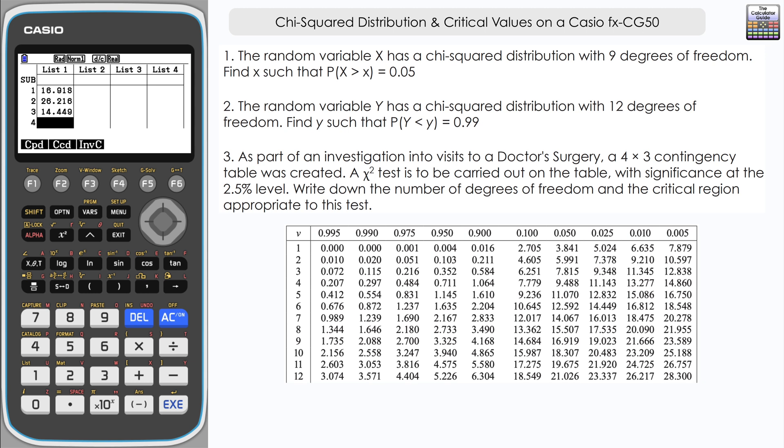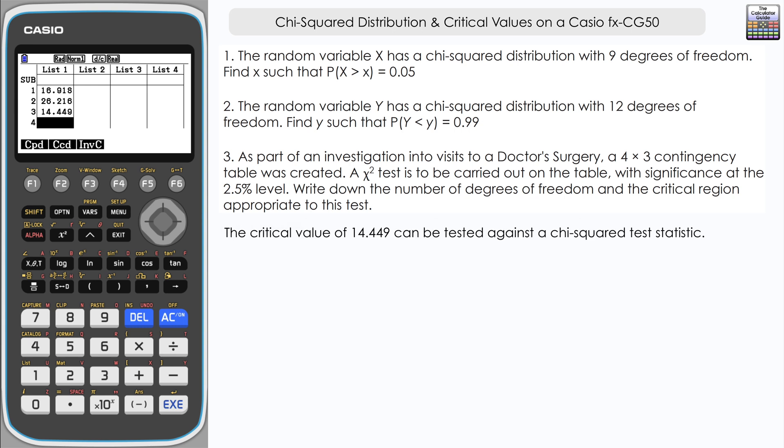We would then use the calculator to do the test on that, and there's a previous video if you're not sure how to do that, generate the chi-squared test statistic. And then what you can do is you can test it against this value here, 14.449. If it exceeds that value, then you can reject your null hypothesis, for example. That hasn't been defined here. We were only interested in finding the degrees of freedom and the critical region for this.